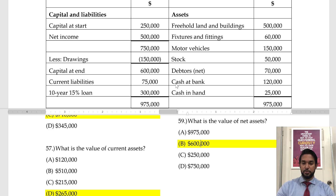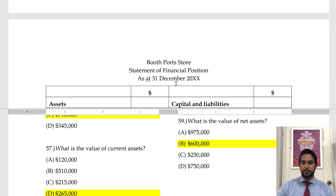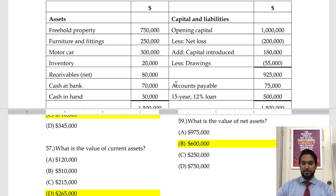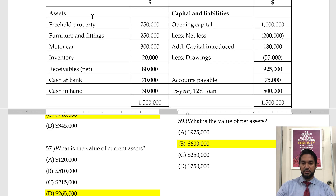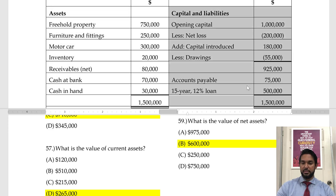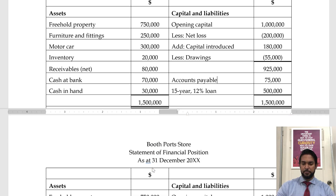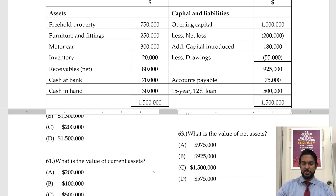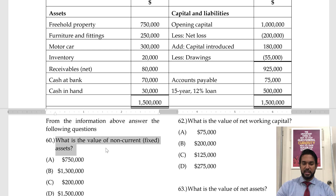I'm going to leave the screen split because I have another Booth Ports Store financial statement, but it is different. Assets are now on the left-hand side and capital and liabilities are on the right-hand side, with different values as well. From the information above, answer the following questions. What is the value of non-current or fixed assets? It's basically the same questions with a different balance sheet.